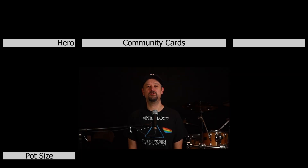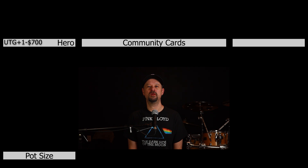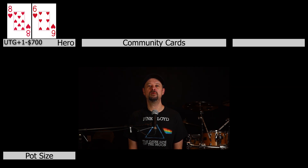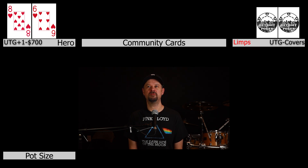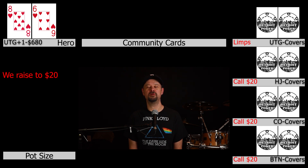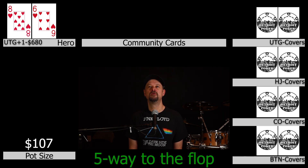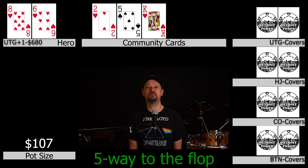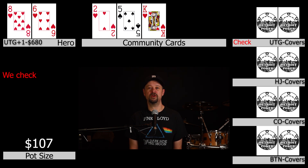For comparison, this hand is from 2/5 no-limit hold'em — just your average Friday night. Hero is under-the-gun-plus-one playing $700 and gets dealt eight-six of hearts. Under the gun limps (a very passive player limping nearly 100% of hands). Hero raises to $20, the hijack calls, the cutoff calls, the button calls, and under the gun calls. We go to the flop five ways — everyone covers us. The flop comes out king-deuce-five with two hearts and a spade. Under the gun checks and we check as well. The hijack checks and the cutoff bets $50.